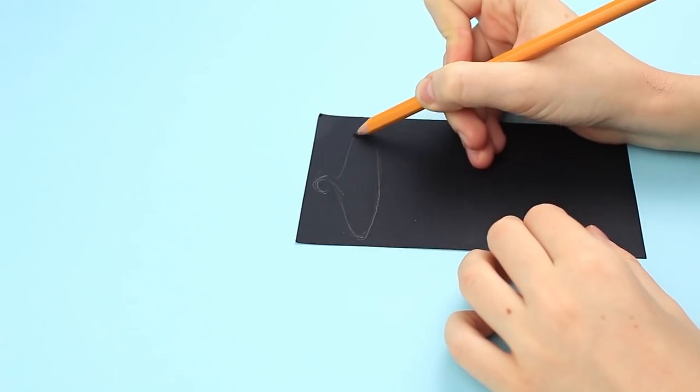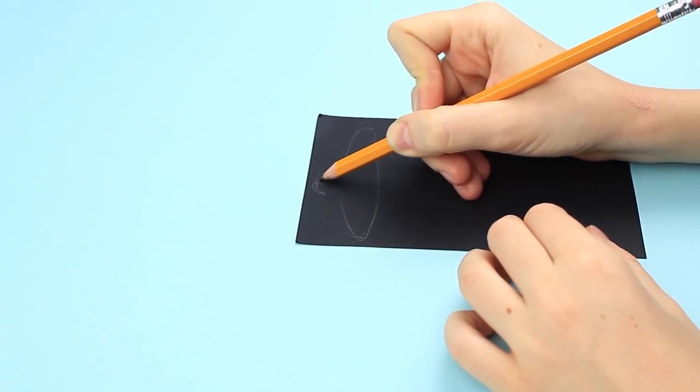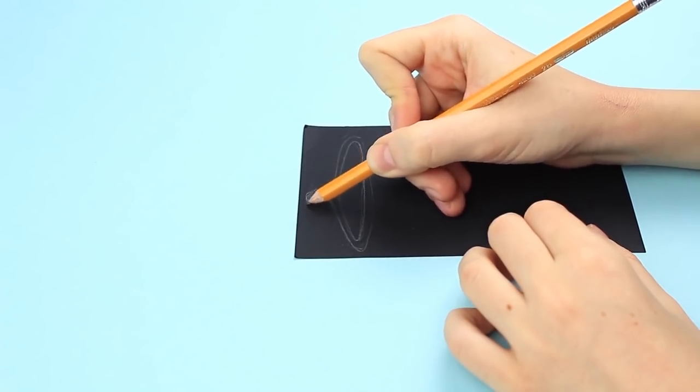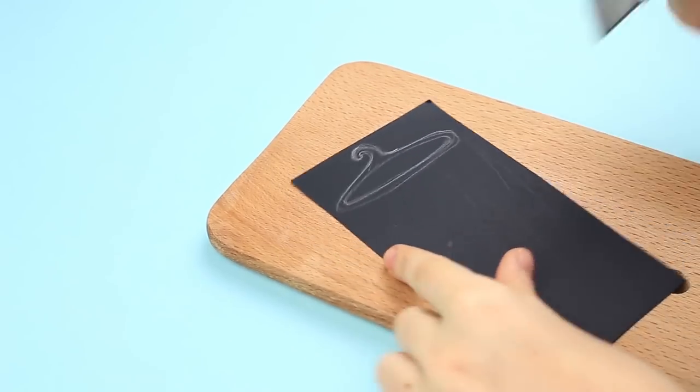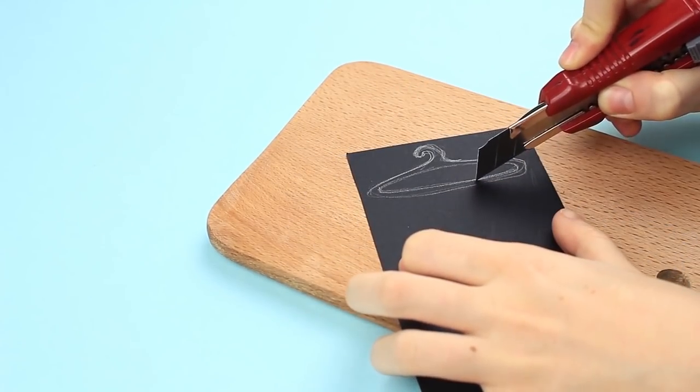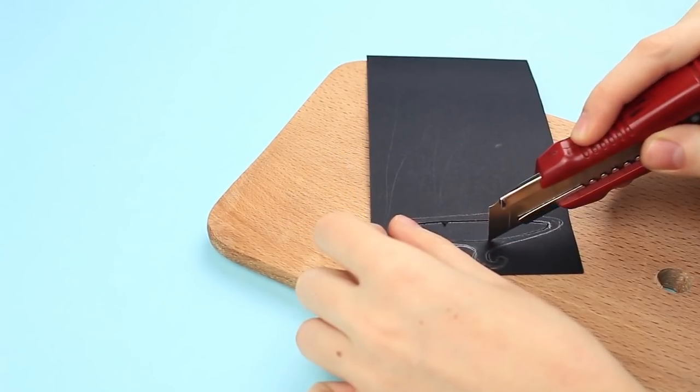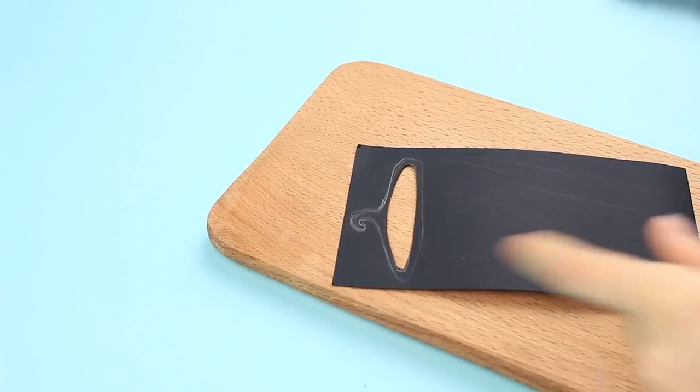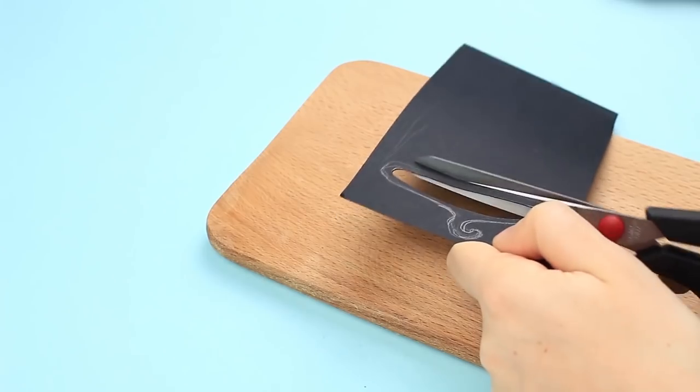Outline a hanger on the black cardboard. Lay a wooden board. Cut out the inner part with a craft knife. You can use scissors to cut the outline.